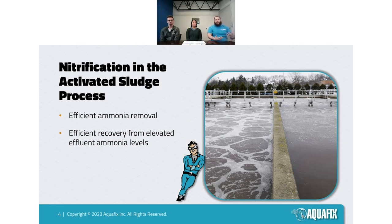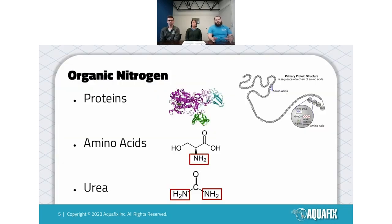We'll talk about the importance of nitrification in your wastewater system. To put it plainly, it's to remove ammonia from your system. You will have incoming ammonia from a handful of sources. Generally, that ammonia comes from organic nitrogens entering your system that are broken down by other microorganisms — producing ammonia from proteins, amino acids, and urea, which are all common organic nitrogen sources.